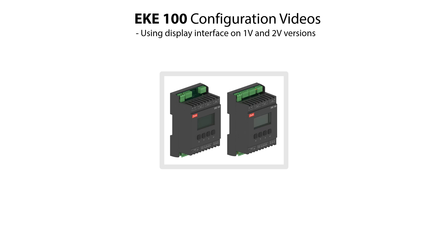The EKE100 1V and 2V versions with built-in display can be configured by using the display interface. The display interface configuration is split into 5 small videos, which includes video 1 showing basic navigation between the different setting modes, including using the keypads and understanding the display readings.